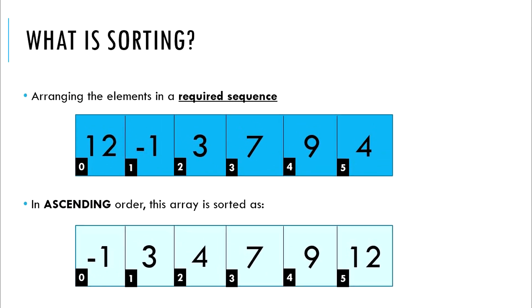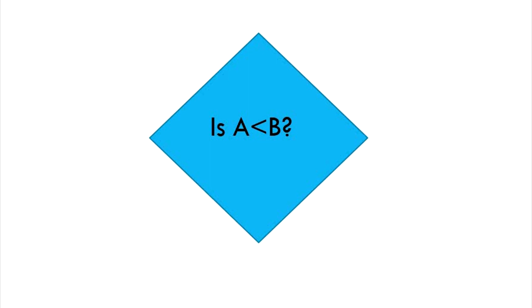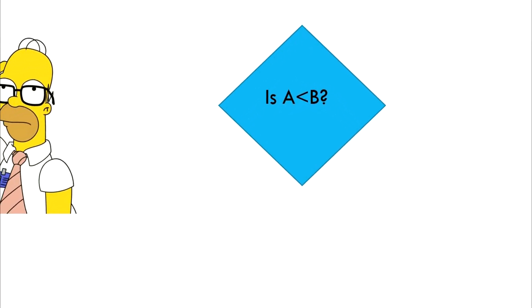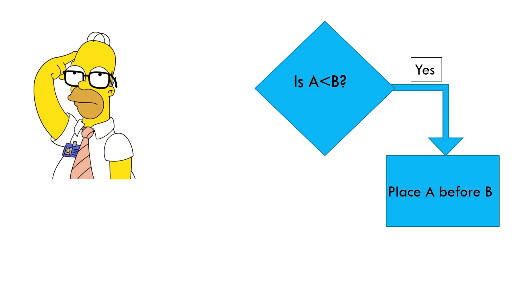Essentially, what we are doing here is comparing the magnitude of each of the numbers. If the magnitude of one number is smaller than the magnitude of another, we are placing the former number earlier than the latter.